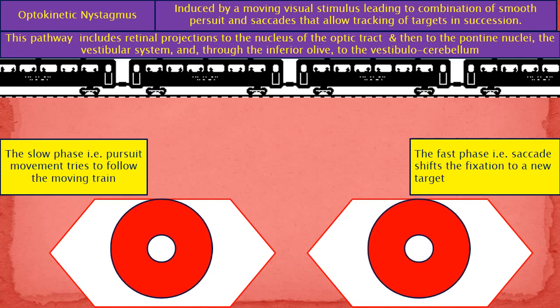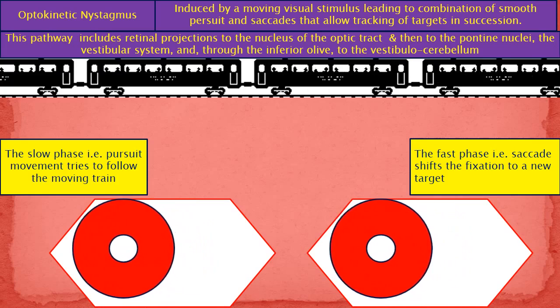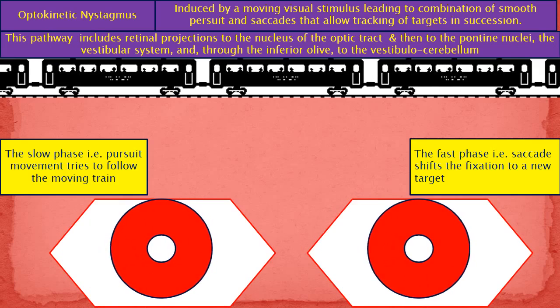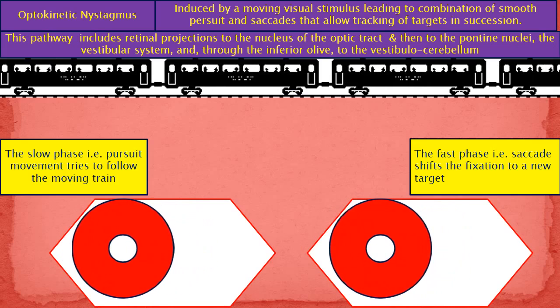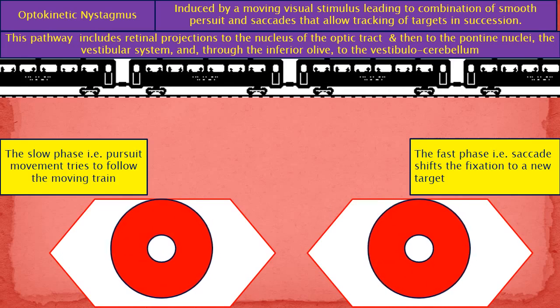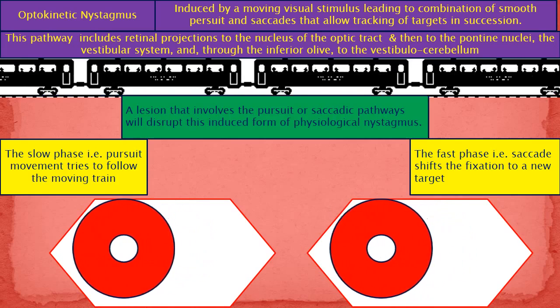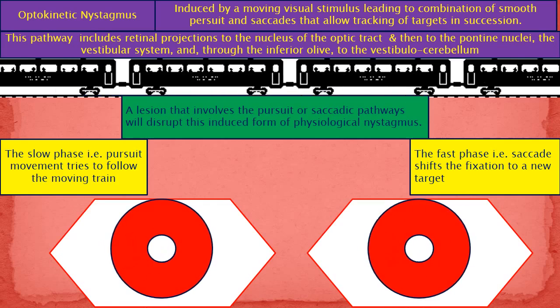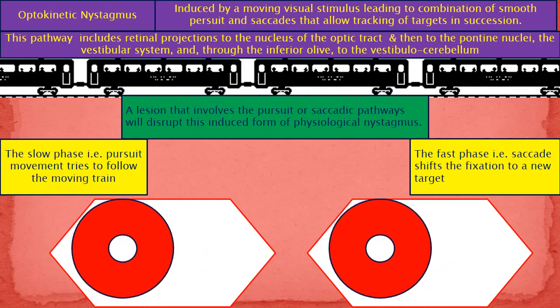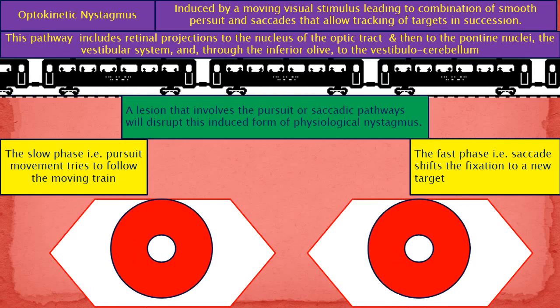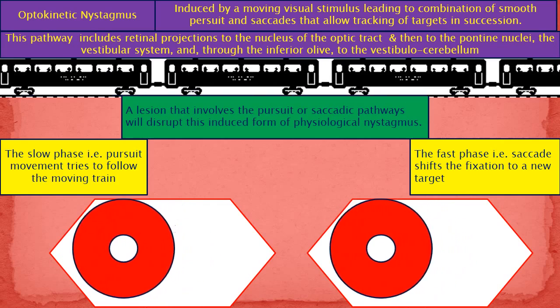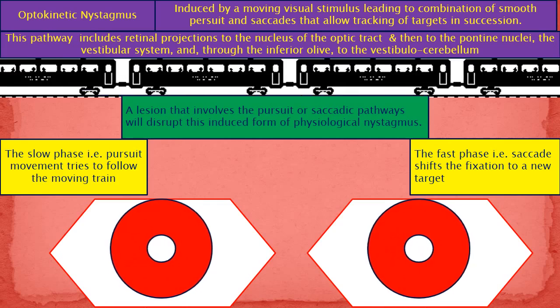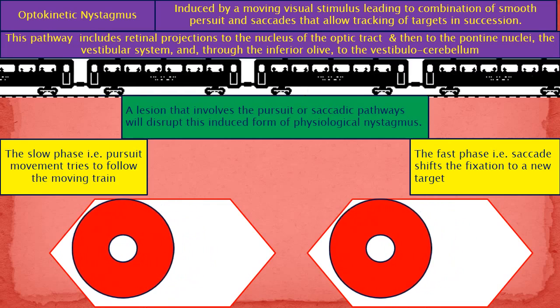Thus, the optokinetic nystagmus helps us to track a moving stimulus. A lesion that involves the pursuit or saccadic pathways will disrupt this induced form of physiological nystagmus. Thank you.